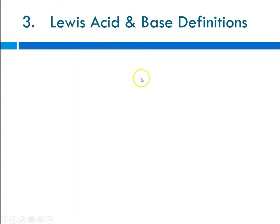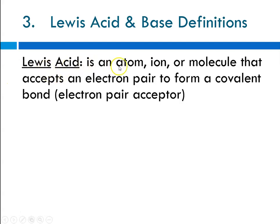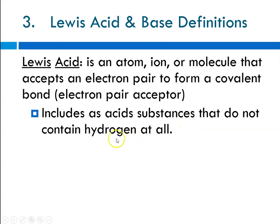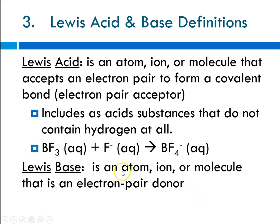Our third definition for acids and bases — the Lewis definition — is the broadest, encompassing the most species with acidic or basic properties. A Lewis acid is any atom, ion, or molecule that can accept an electron pair to form a covalent bond, making it an electron pair acceptor. This includes acids that contain no hydrogen at all. For example, boron trifluoride can react with a fluoride ion to form boron tetrafluoride with no hydrogen involved. A Lewis base is an atom, ion, or molecule that can donate an electron pair.